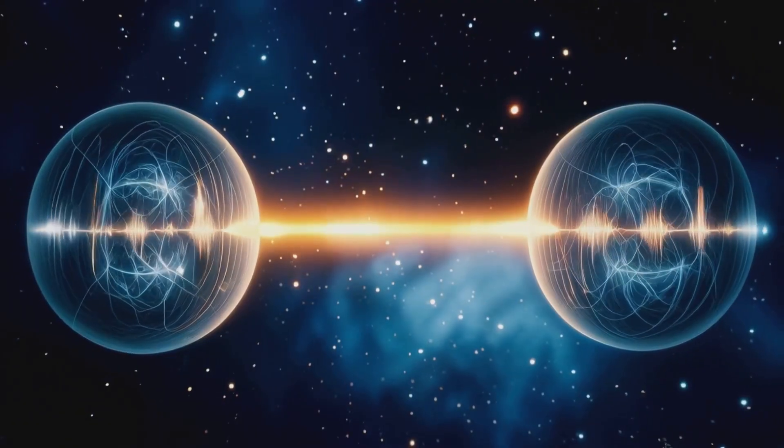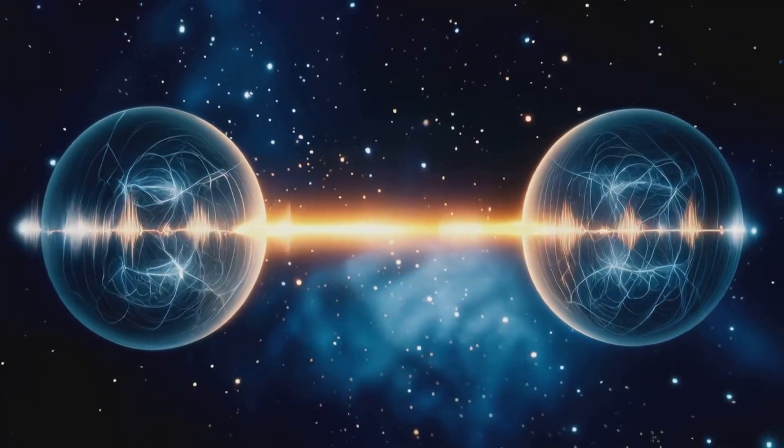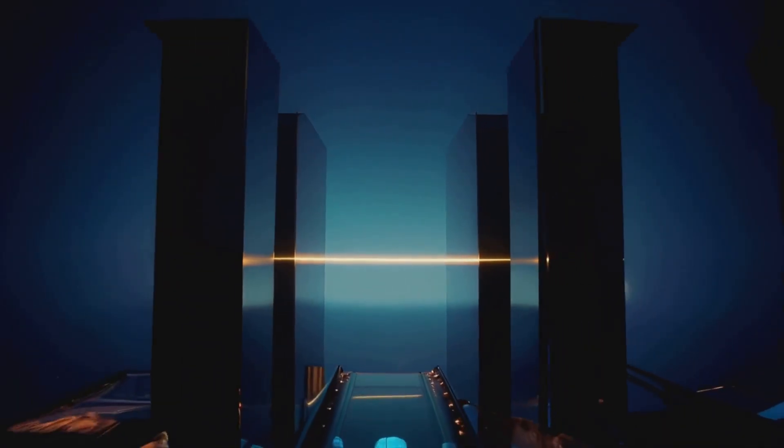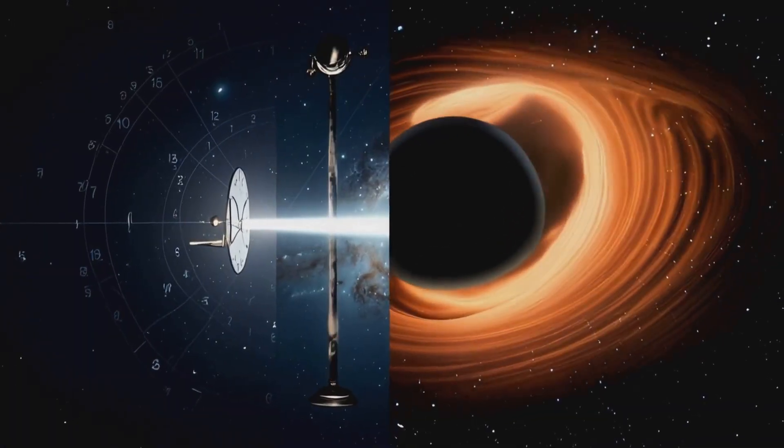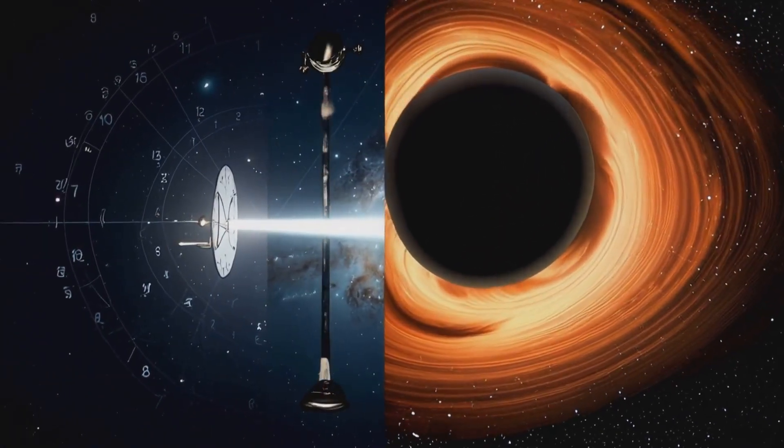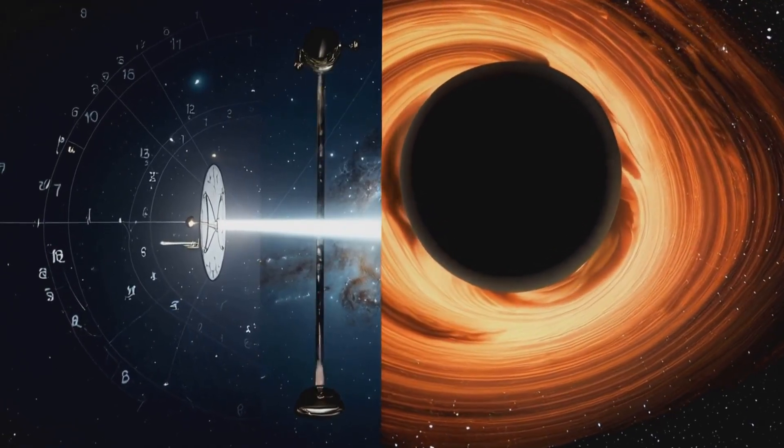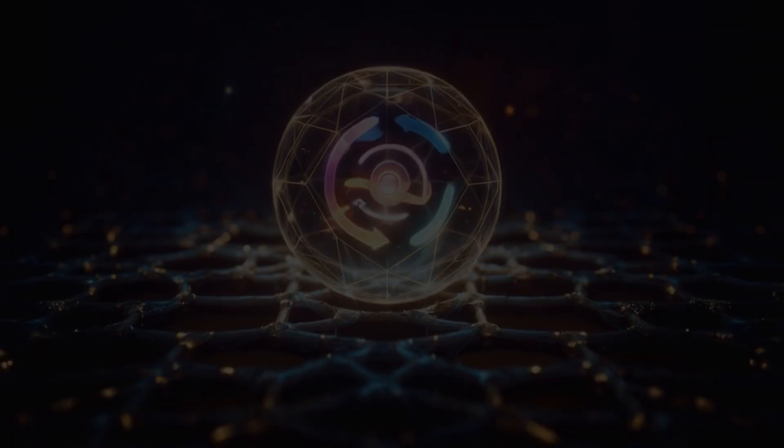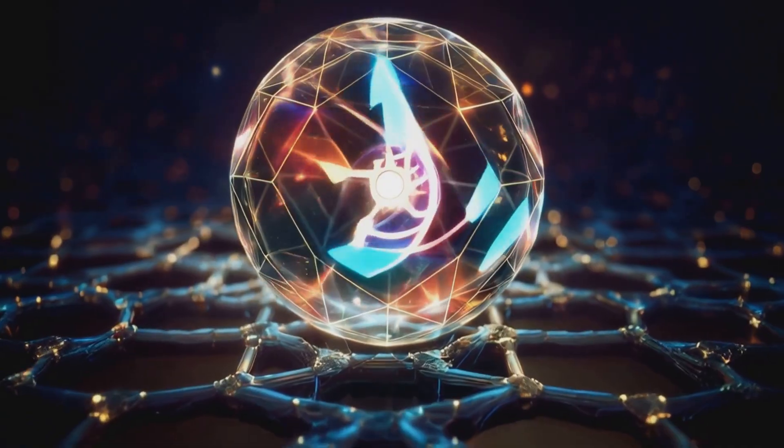When a measurement occurs, a single possibility is selected from the state vector, collapsing the wave function and bringing that specific outcome into our reality. This process, happening countless times every second, shapes the universe as we experience it.